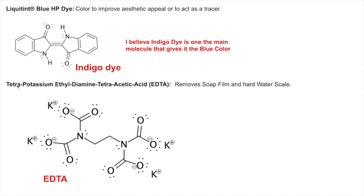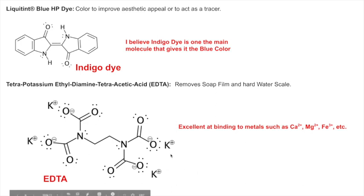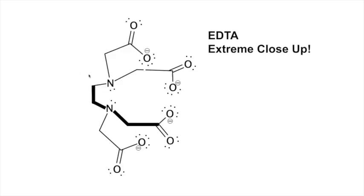Formula 409 also contains tetrapotassium EDTA (ethylenediamine tetraacetic acid). EDTA helps remove soap scum and hard water scale, and is a preservative. It's ethylene with two amines, each having two carboxylates. EDTA is amazingly good at binding metals like calcium, magnesium, and iron — you can use it to titrate nearly every element on the periodic table.